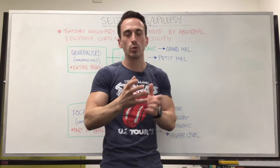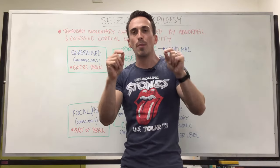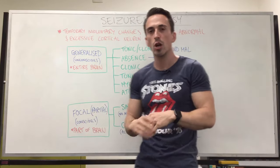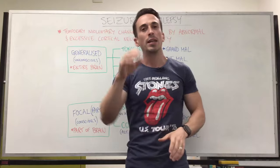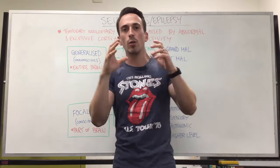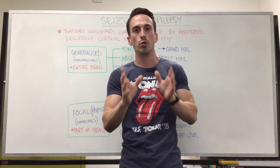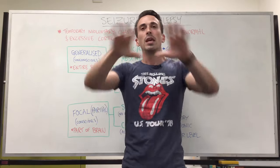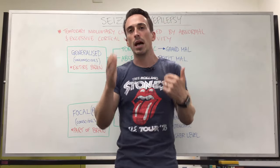Generalized seizures, which we're focusing on, means these seizures happen in all parts of the brain. Focal seizures only happen in certain isolated parts of the brain. An important point about generalized seizures is that they result in the individual becoming unconscious — generalized seizures use all the brain and the individual ends up being unconscious.